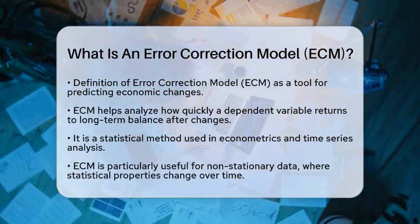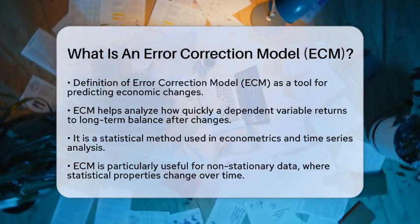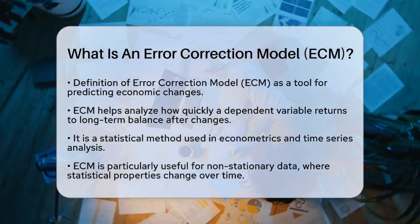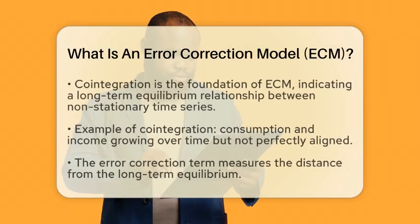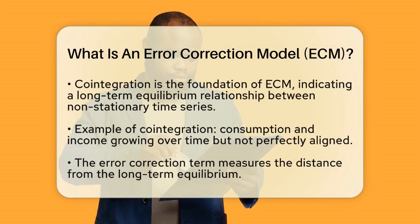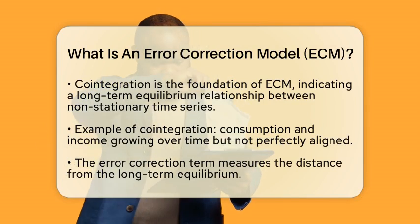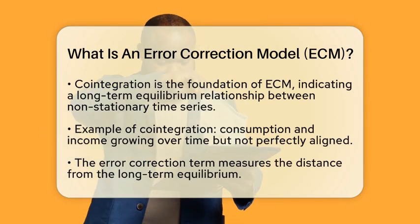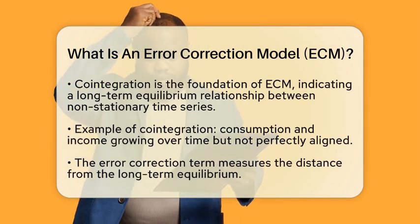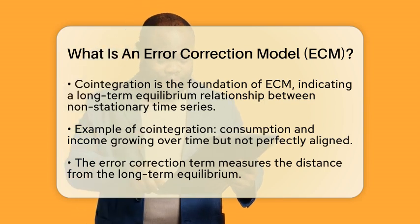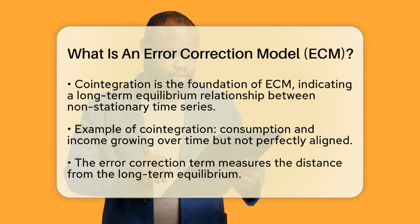The foundation of an Error Correction Model is cointegration. Cointegration refers to a long-term equilibrium relationship between two or more non-stationary time series. For example, consider consumption and income. Both may grow over time, but not in perfect harmony. However, their long-term relationship can remain stable, which is where cointegration comes into play.